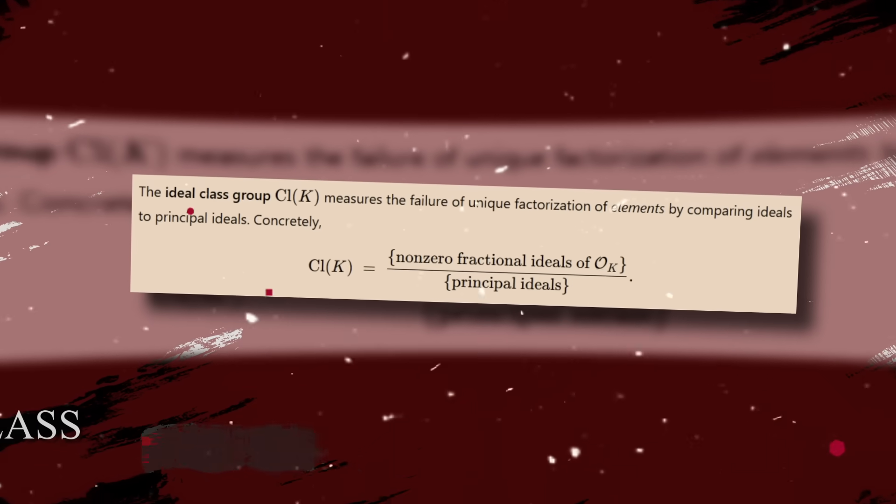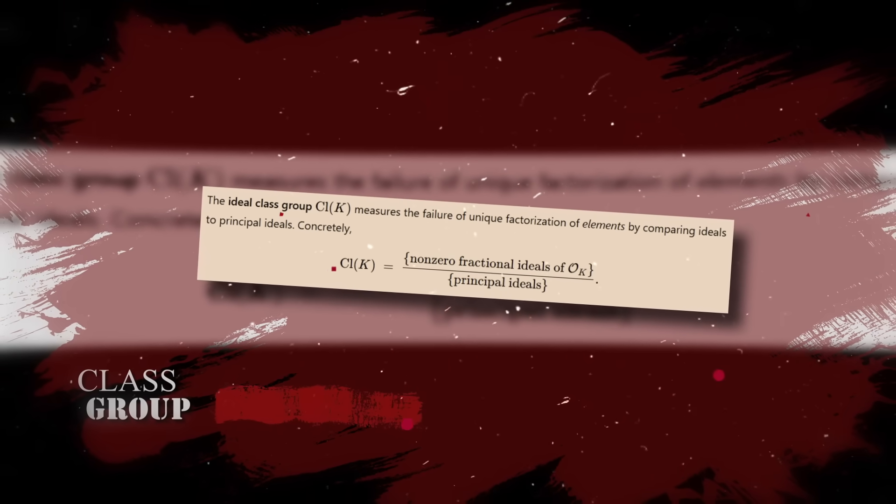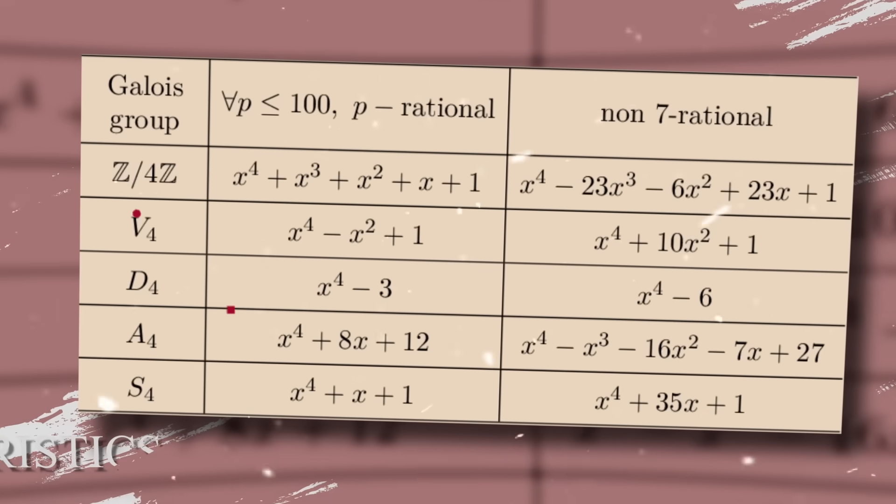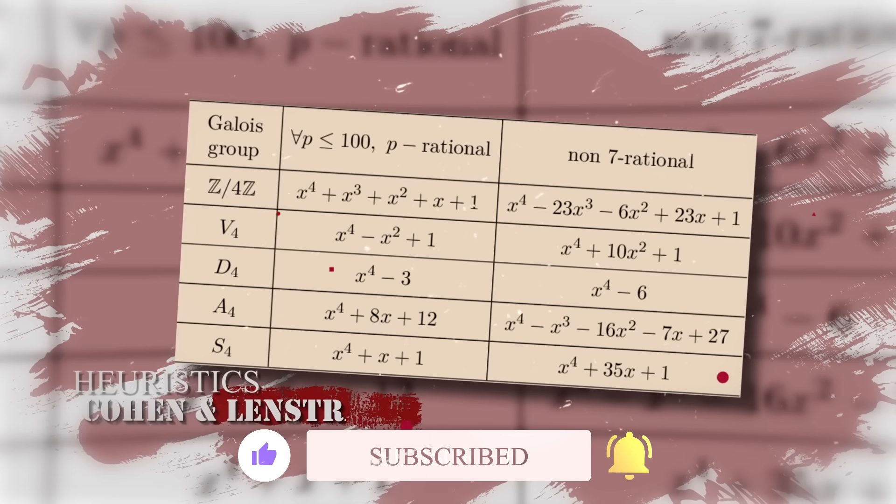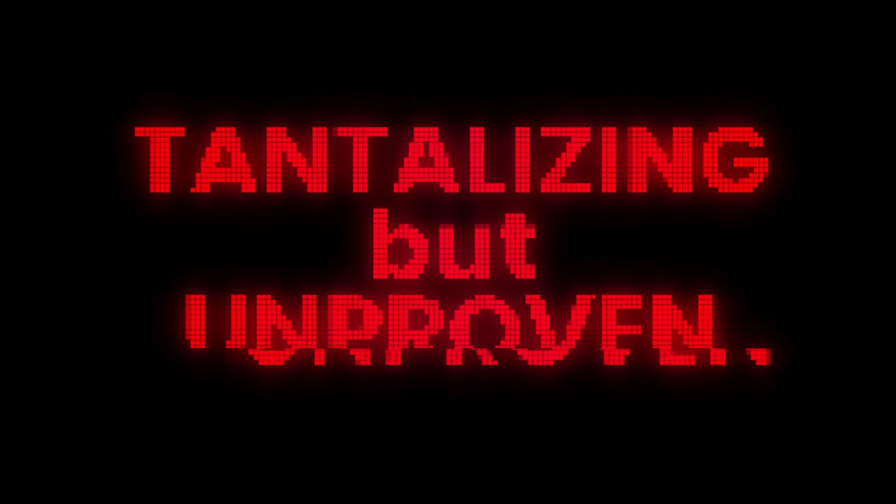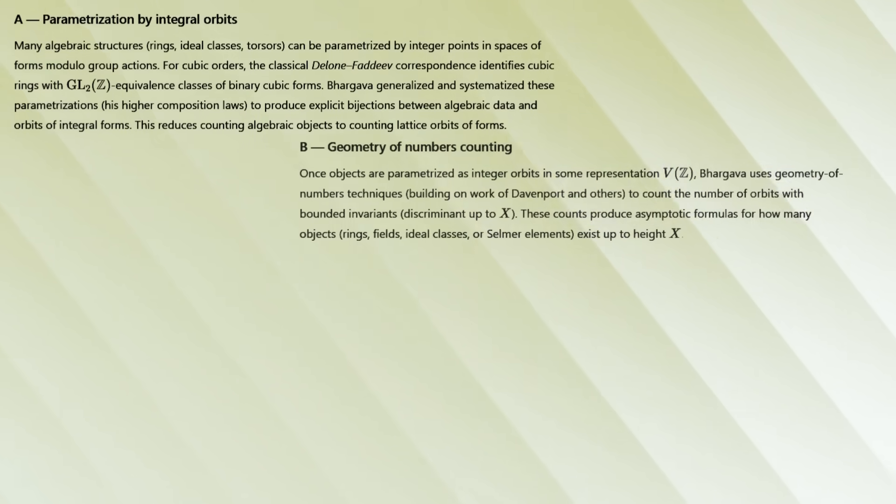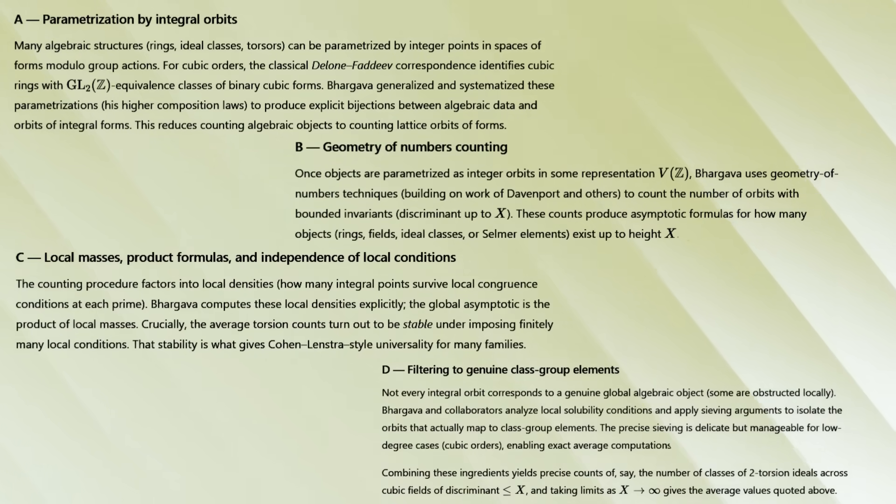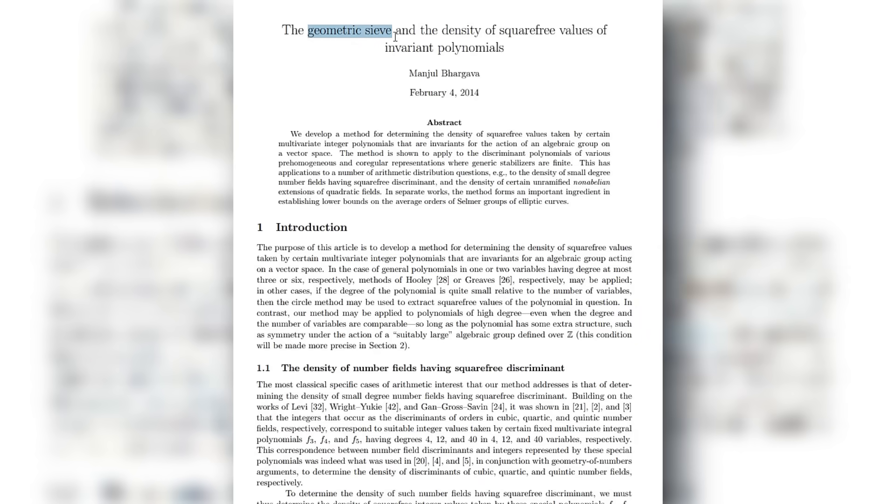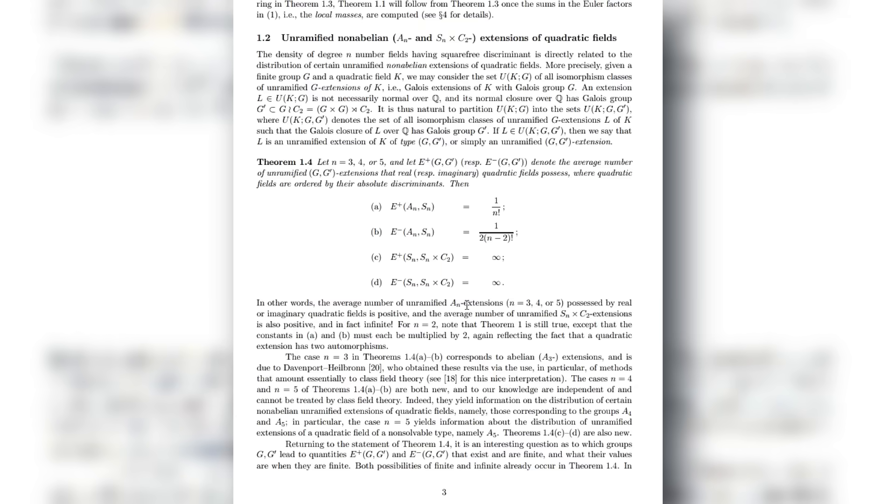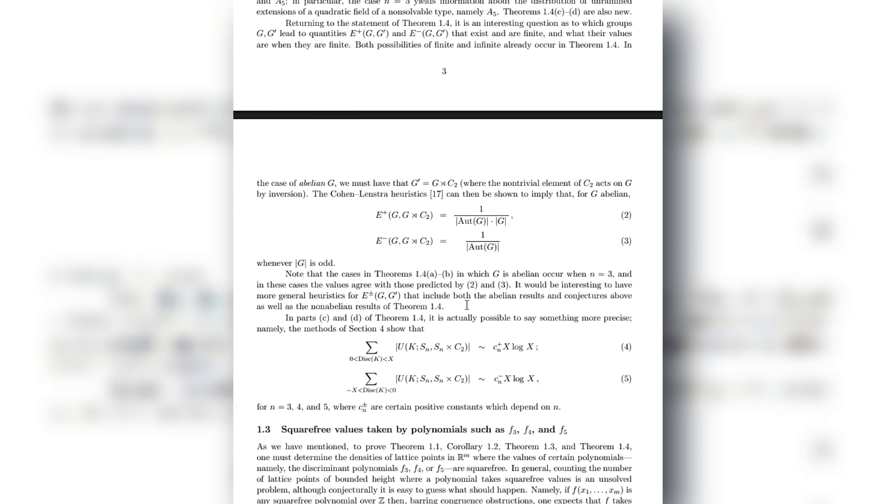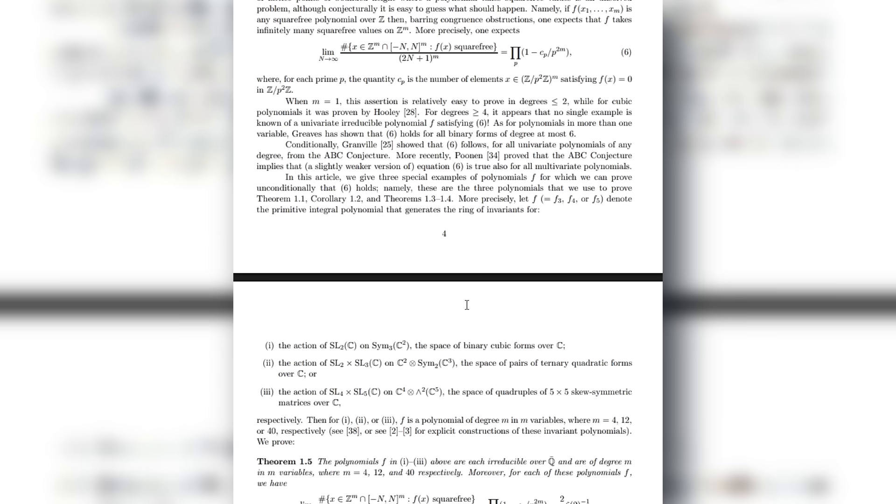Bhargava's work also pierces deep into class groups, the mysterious objects that encode how unique factorization fails in number fields. For decades, mathematicians relied on conjectures from Cohen and Lenstra to make predictions about the distribution of class groups. These predictions were tantalizing, but unproven. Bhargava's techniques offered new evidence and new pathways toward understanding these distributions, making the once-abstract heuristics feel within reach of rigorous confirmation. And then there is his geometric sieve, a method blending geometry, probability, and algebra to count number-theoretic structures with stunning accuracy. It enabled breakthroughs in problems that previously felt uncountable, unmanageable, or immeasurably complex. In just a decade, Manjul Bhargava reshaped entire regions of mathematics, and the world began to take notice.